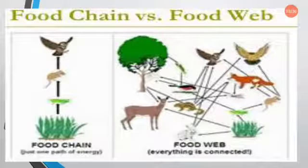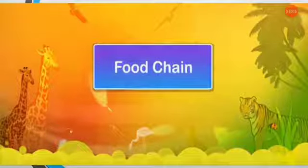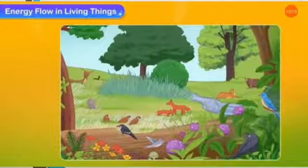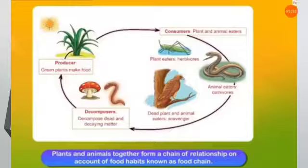Next we discuss about food chain and food web. Food chain means they transfer energy from one living thing to another. For example, grass gives energy to grasshopper, grasshopper gives energy to rat, rat gives energy to eagle — this is a food chain. Food web means the connecting of many food chains. The food chain usually transfers energy from one living thing to another. Plants and animals together form a chain of relationships based on their food habits, known as a food chain.